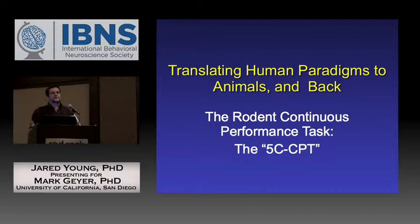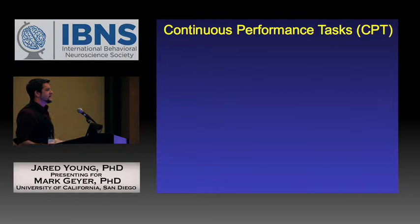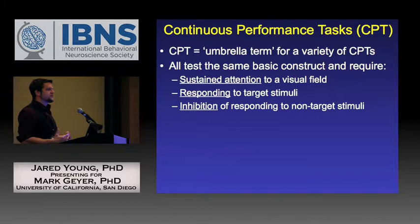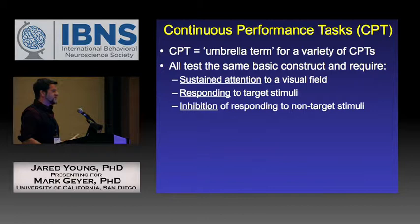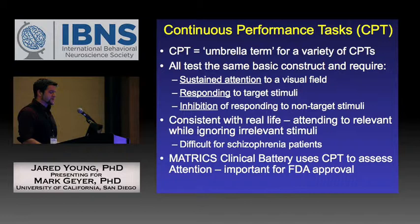Here is an example of taking a human task and translating it into an animal test, then back again. The continuous performance test is one of the gold standard tests of attention used in the clinic. CPT is an umbrella term for various tasks, but all share the same construct: the subject attends to a visual field over time, responding to target stimuli but inhibiting responses to non-target stimuli. This is deficient in schizophrenia and bipolar disorder, and was identified by MATRICS as a key cognitive test for attention.